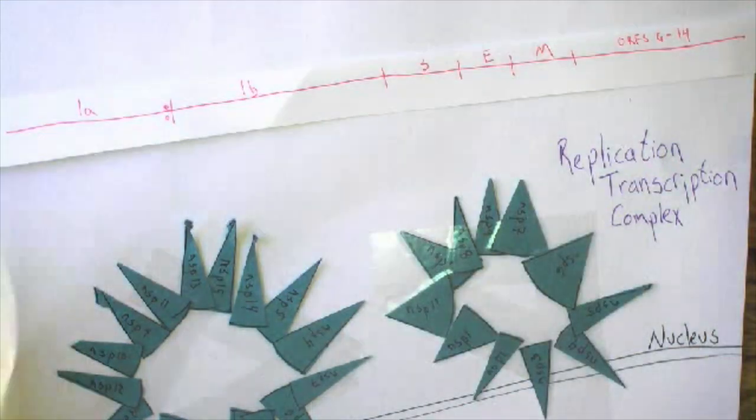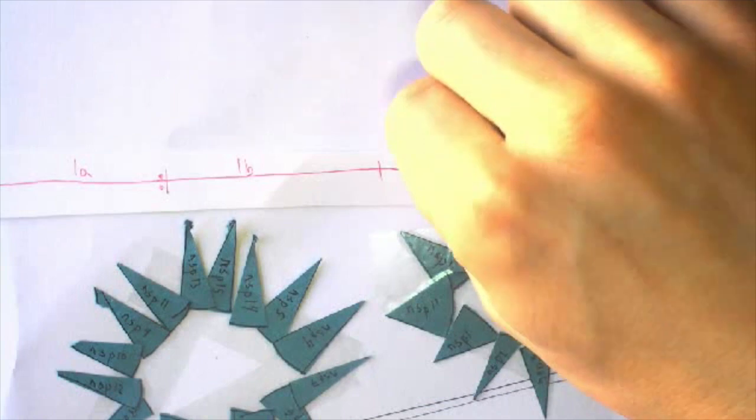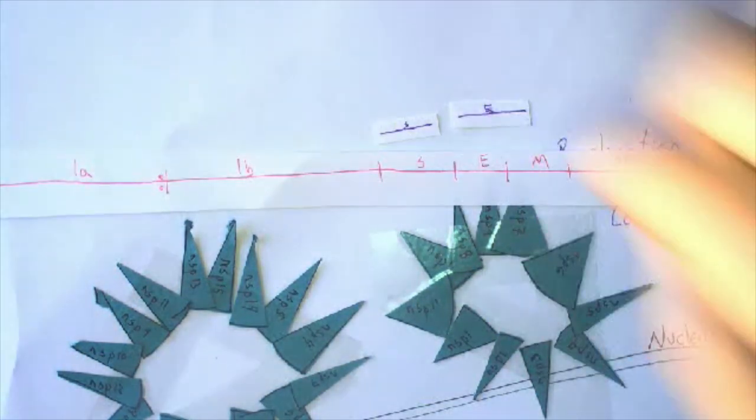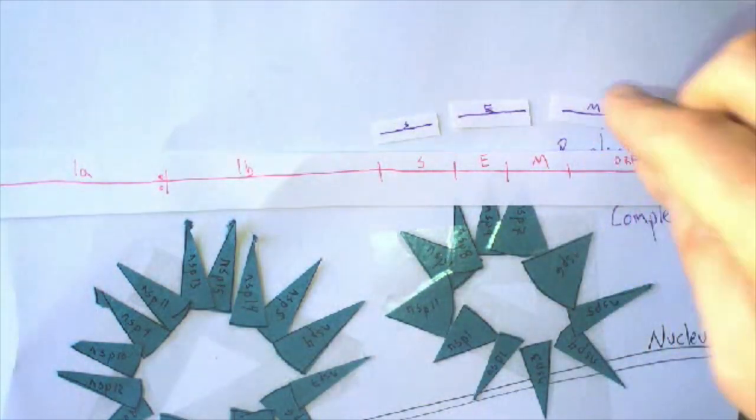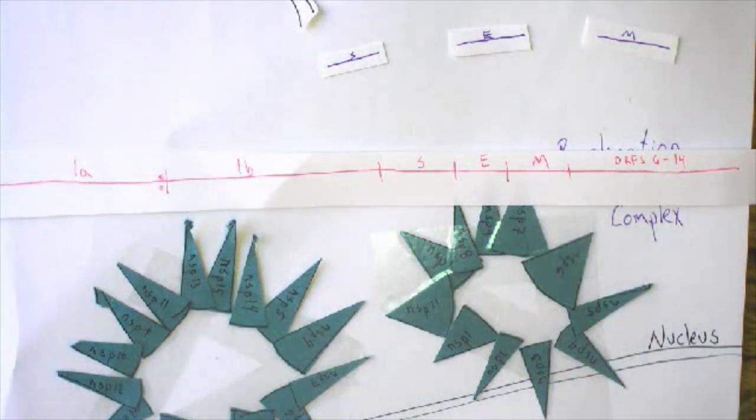This negative strand can then be used to generate a positive or exact copy of the mRNAs for all of the structural proteins, the spike and the envelope and membrane glycoproteins, which then go and embed themselves in your cell membrane.